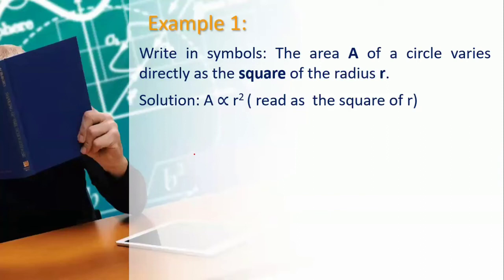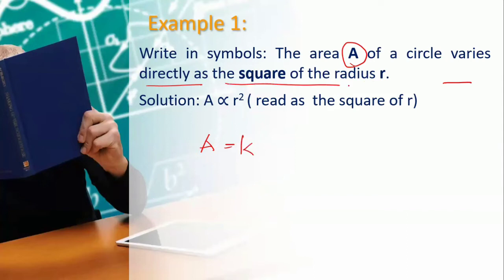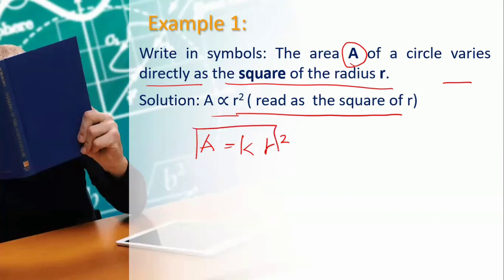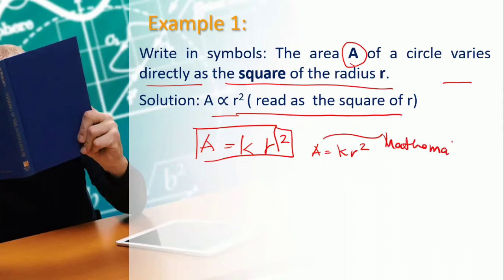Let's have an example. Write in symbols: the area A of a circle varies directly as the square of the radius r. Since 'varies directly' puts k in the equation, and the square of radius r gives r², our mathematical equation is: A = kr².